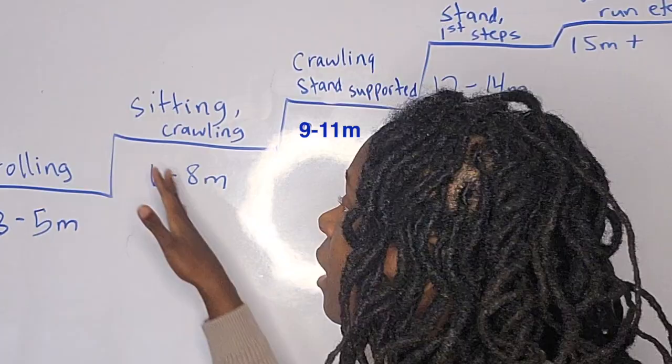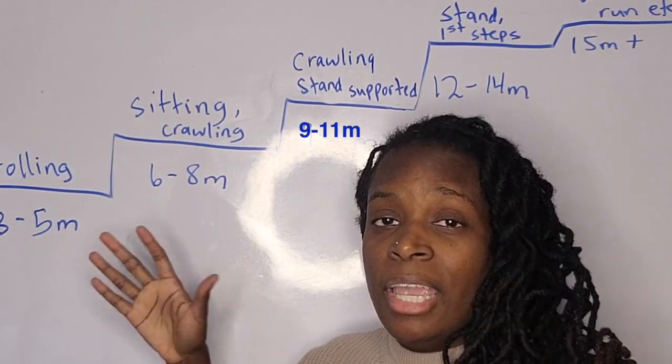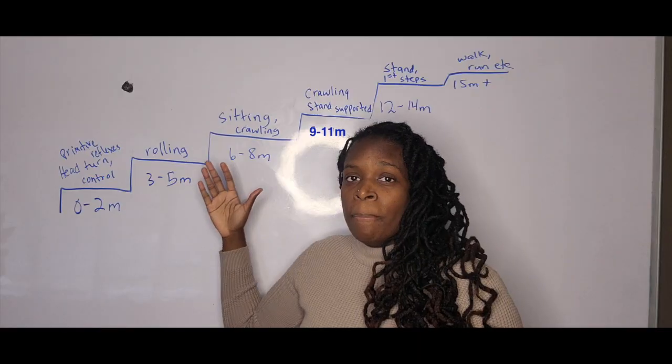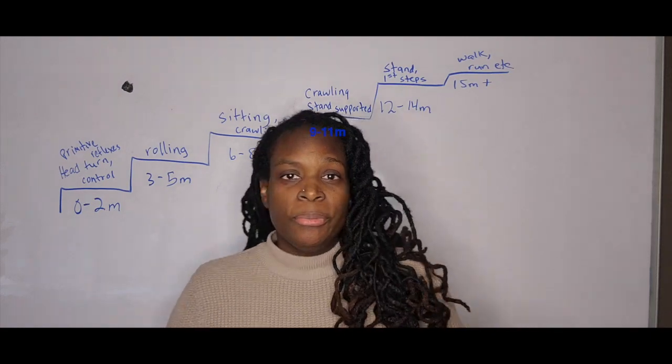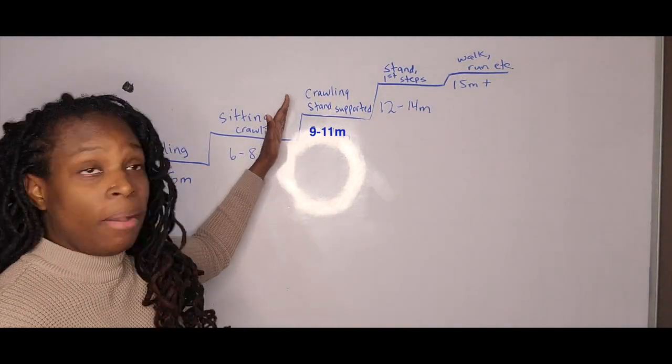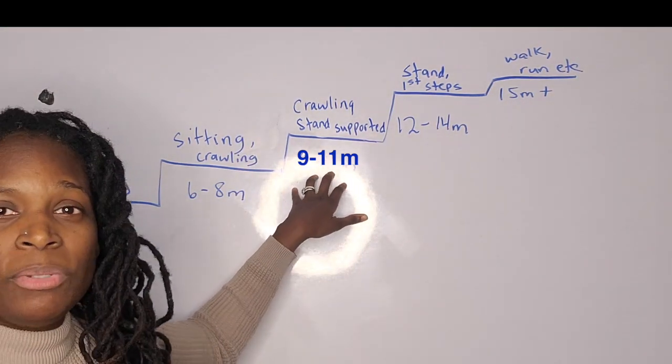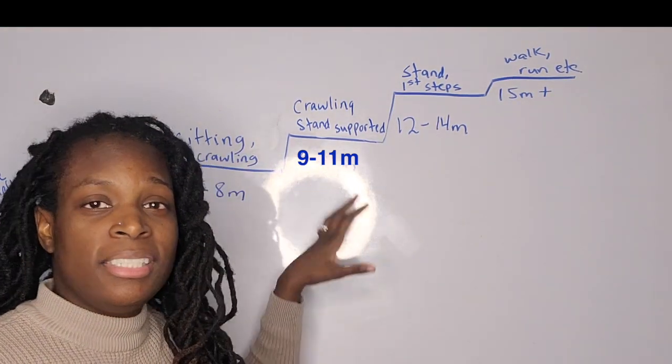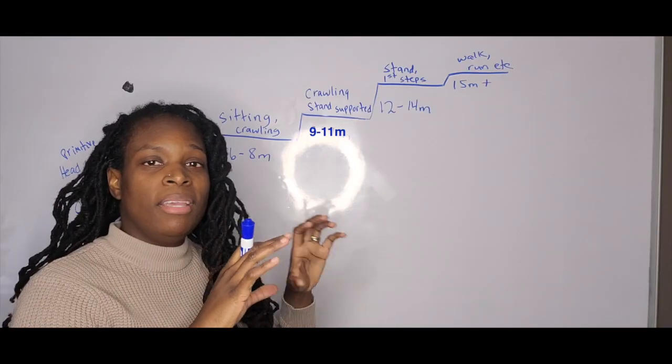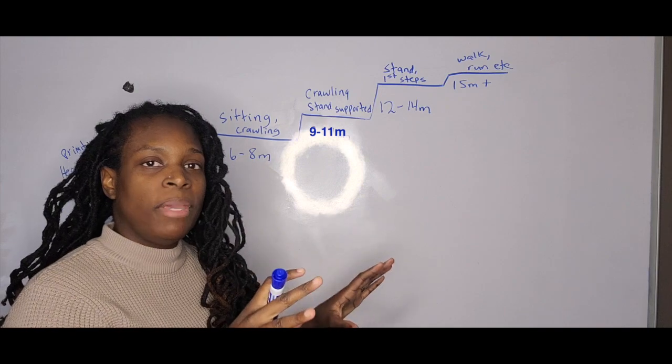Now, the next step is six to eight months. At six to eight months, you're looking at sitting and crawling. And then as we continue from sitting to crawling, now you're going up another step. Now you're looking at crawling and supported standing, which is also called cruising. This is when your infant is holding onto furniture and they're starting to kind of get their bearings.